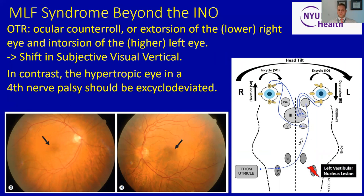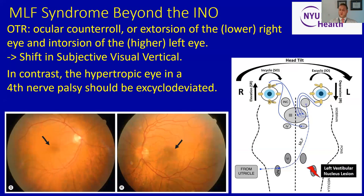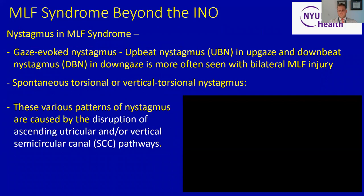With ocular tilt reaction, the eyes are vertically deviated and the lower eye will be extorted, whereas the higher eye will be intorted. The opposite is true in a fourth nerve palsy because the action of the superior oblique is to intort the affected eye — so if there's damage to the intorting superior oblique muscle, the eye will be excyclodeviated. The higher eye will be excyclodeviated. There's also a way of measuring this with double Maddox rods that measure torsion. Recent attention has been paid to nystagmus associated with MLF syndrome, including upbeat nystagmus in upgaze and downbeat in downgaze, seen more frequently with bilateral MLF injury, thought to be related to disruption of the utricular pathways or vertical semicircular canal pathways.